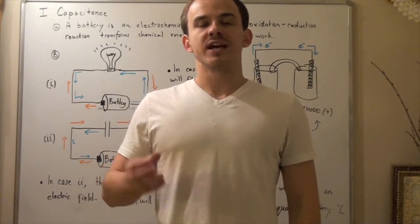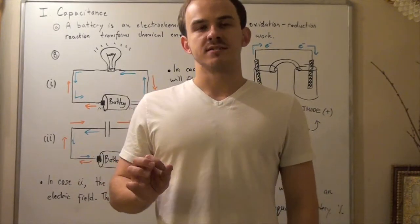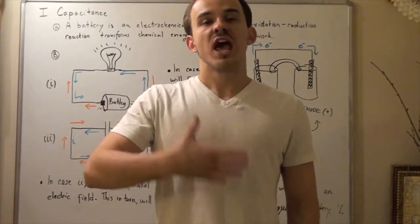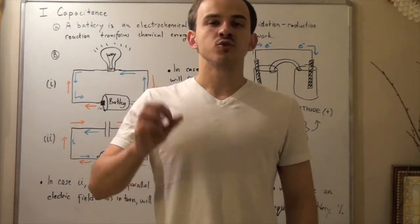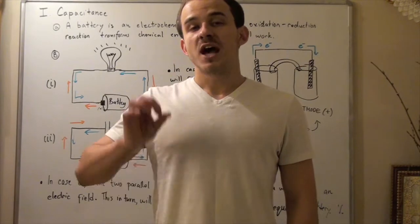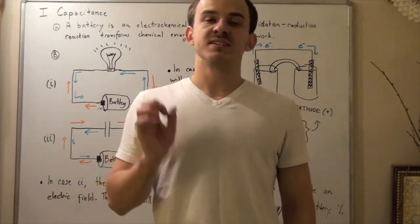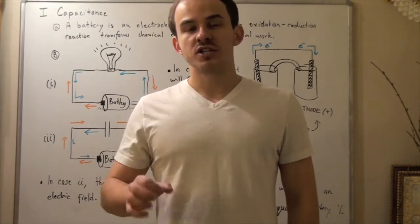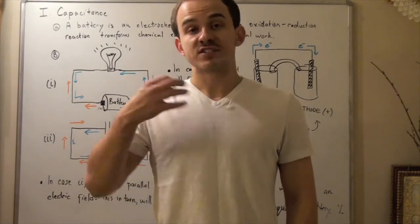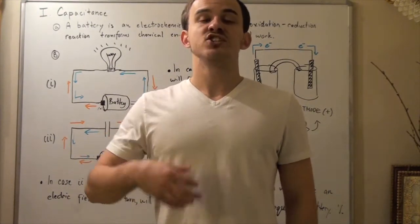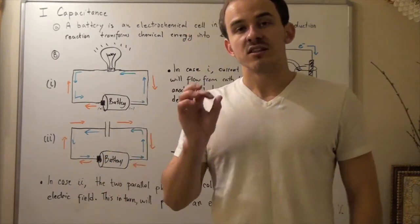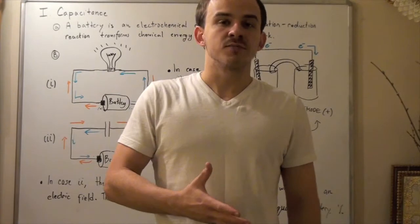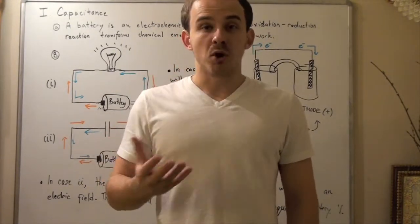In this lecture, we're going to look at a concept known as capacitance. Before we talk about capacitors and how they function and why they're important, let's recall what a battery is. From chemistry, a battery is simply an electrochemical cell in which an oxidation-reduction reaction converts chemical energy into electrical work. This electrical work can be used to power devices such as a calculator, a motor, or a light bulb.